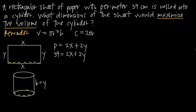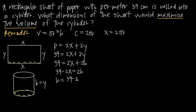Since the circumference of a circle is 2πr, we can say x = 2πr. Now, substituting h = y into our perimeter equation gives 39 = 2x + 2h. Solving for h: subtract 2x from both sides to get 39 − 2x = 2h, then divide by 2 to get h = (39 − 2x)/2. Solving x = 2πr for r by dividing both sides by 2π gives r = x/(2π).